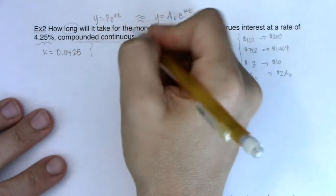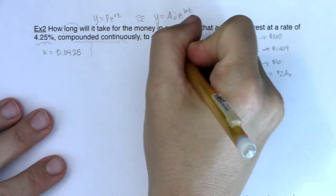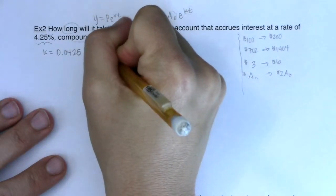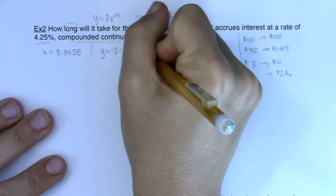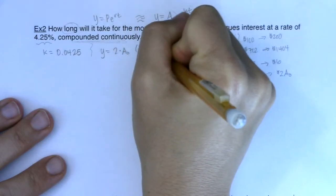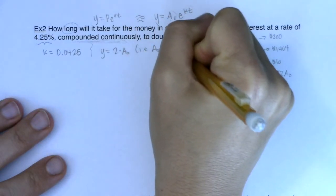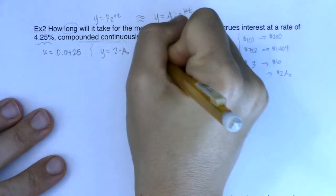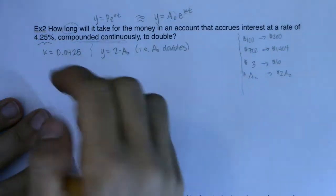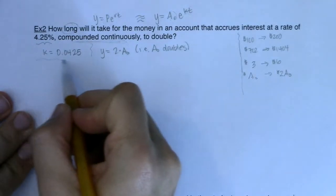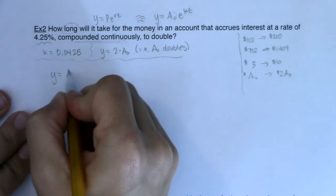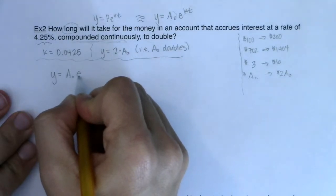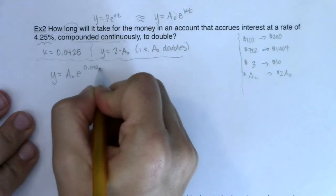So I am going to have this y value to plug in. We know that y will equal two times A sub zero, right, because that's saying that your money, A sub zero, doubles. All right, and we're still solving for a time value. So let's start plugging these things in one at a time. So based off of this initial piece of information, I can write y is equal to A sub zero E to the 0.0425T.